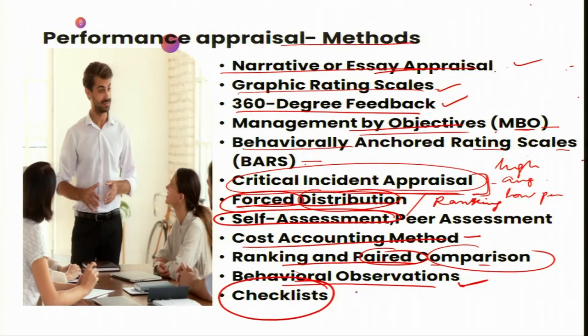The Checklist Method involves predefined lists of performance criteria, where the appraiser checks off the items that have been met or that apply to the employee's performance. This was all about performance appraisal. We have covered many methods related to performance appraisals and key components of performance management.